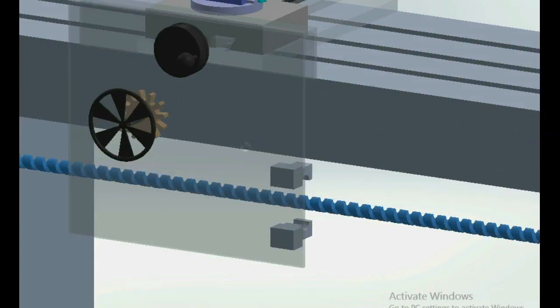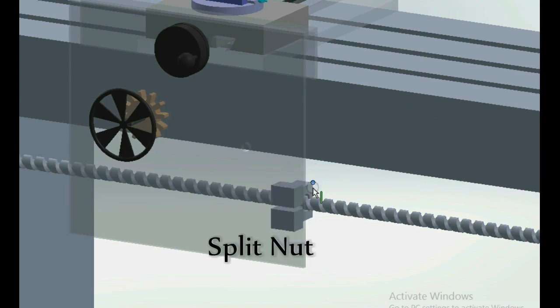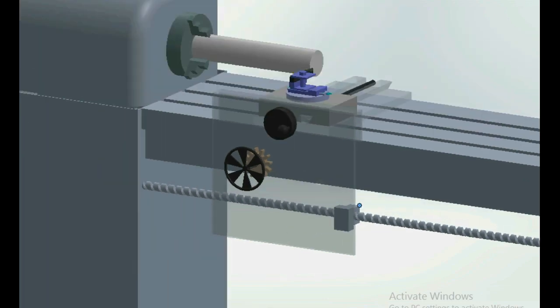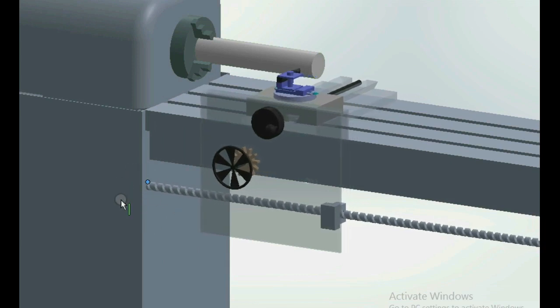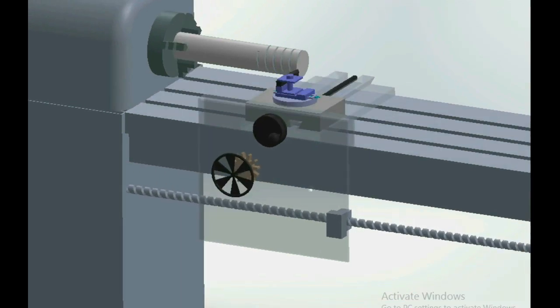There is a split nut on the carriage which can be engaged onto the lead screw so that the carriage moves as per the rotation of the lead screw.